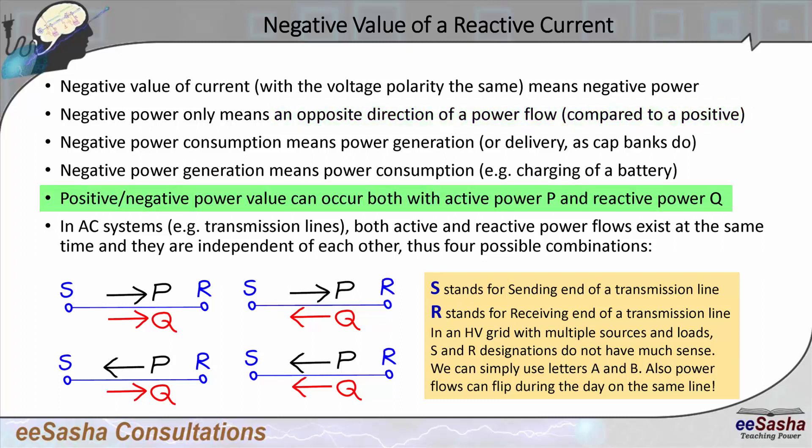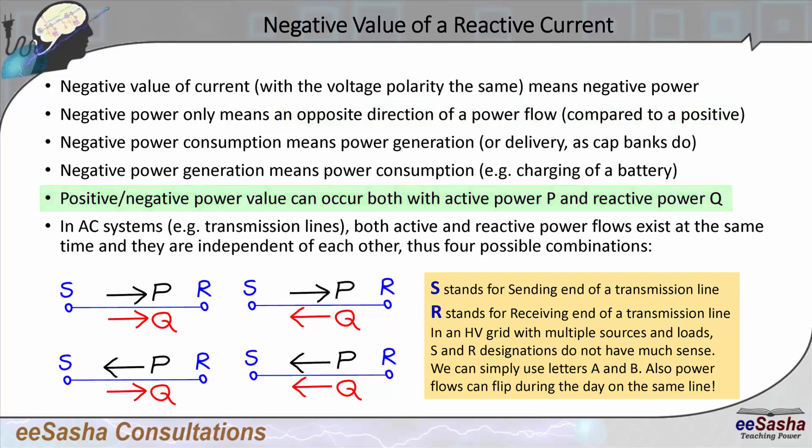Negative power can happen with both active and reactive power. In both cases, what it really means is that the power just flows in the opposite direction.